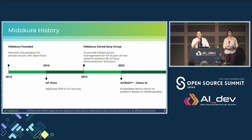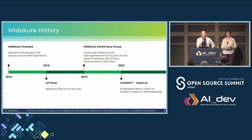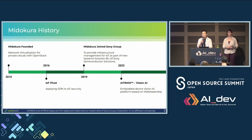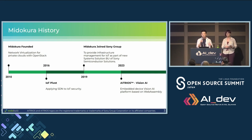A little bit about Midokura. We started off as a startup in 2010 doing SDN — Software Defined Networking — with integration with OpenStack. In 2019 we were acquired by SSS, Sony Semiconductor Solutions, who at the time had the biggest market share in image sensors. The idea was to bring virtualization from the cloud all the way to the edge where the sensors are, so you can run workloads on devices where the data is generated.